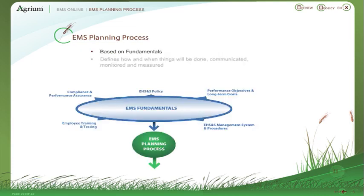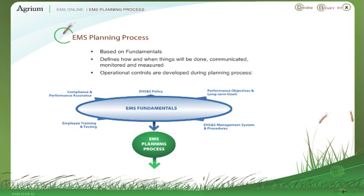Our planning process defines how and when things will be done, communicated, monitored and measured. Operational controls are developed during the planning process. Let's take a closer look.